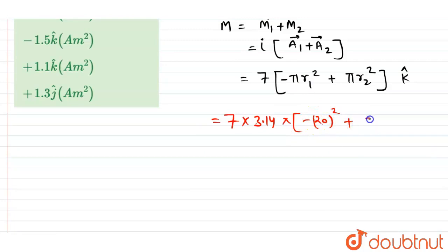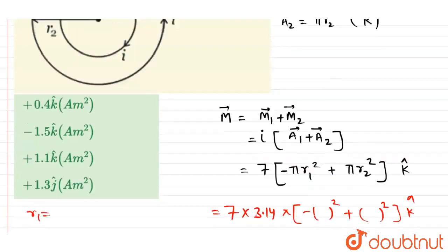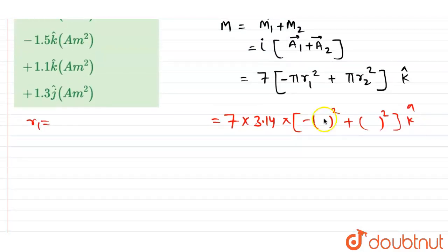Means square of 20 plus square of 30, and the direction should be in the k-hat. Now, these are given to us in centimeters, so we have to convert it into meters also. r1 is 20 centimeters, so it should be 0.2 meters, and r2 is 0.3 meters.